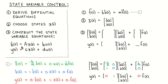In these equations, x-dot is the derivative of the state vector, A is a constant matrix, x is the state vector, B is a constant column vector, u is the input, y is the output, C is a constant row vector, D is a constant scalar, and u is the input.